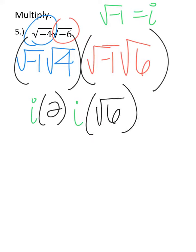So now, on the outside here, i times 2 times i is 2i squared, and then I'm going to bring down my square root of 6. So, i squared is negative 1.